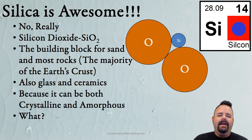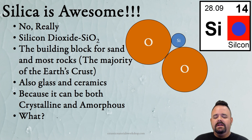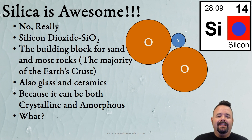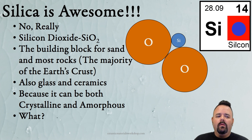Silica is also the basis for all glass and ceramics. There are a few high-tech applications that don't use silica, but for the most part we use a lot of it. As I said, it's what makes up our glazes and our clay — it is what we're doing. We're just pushing around silica.